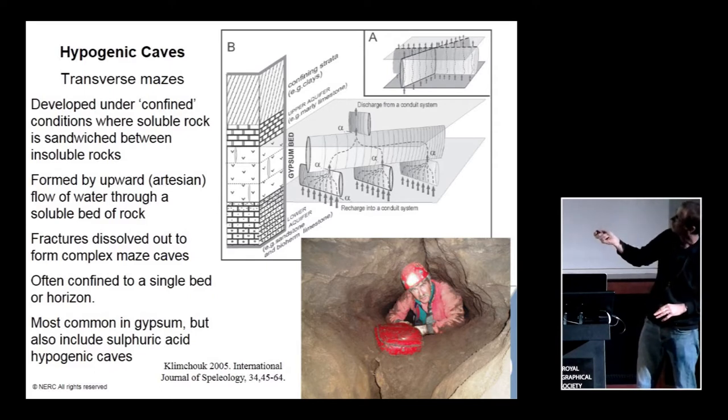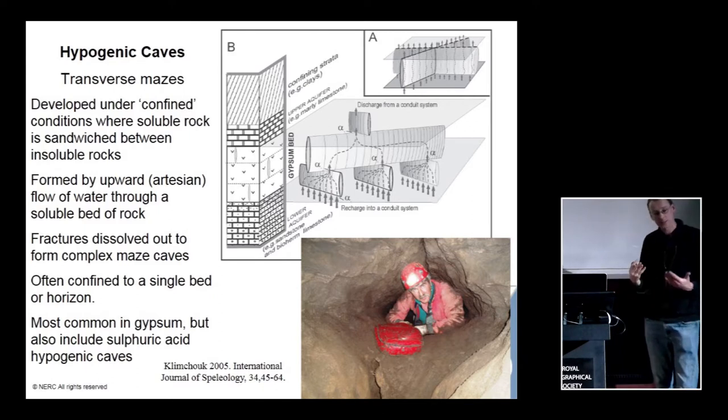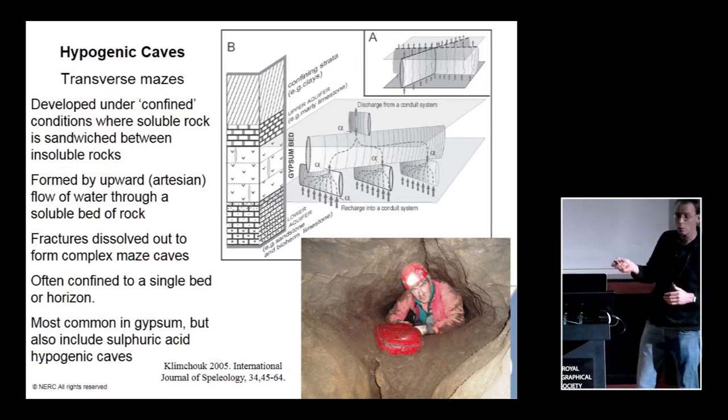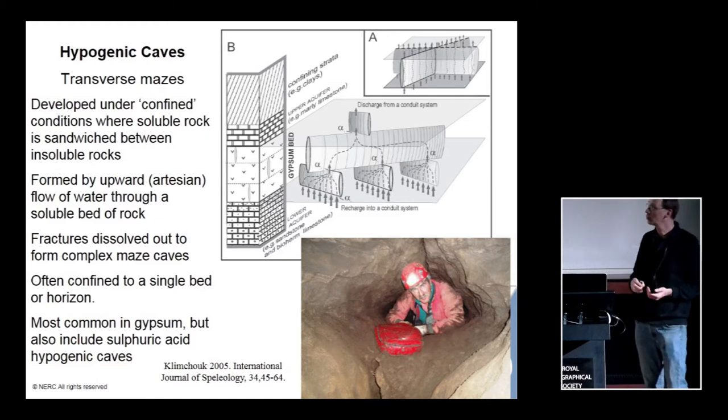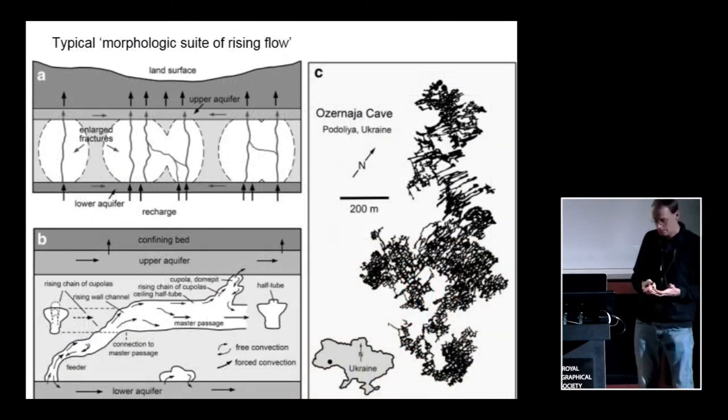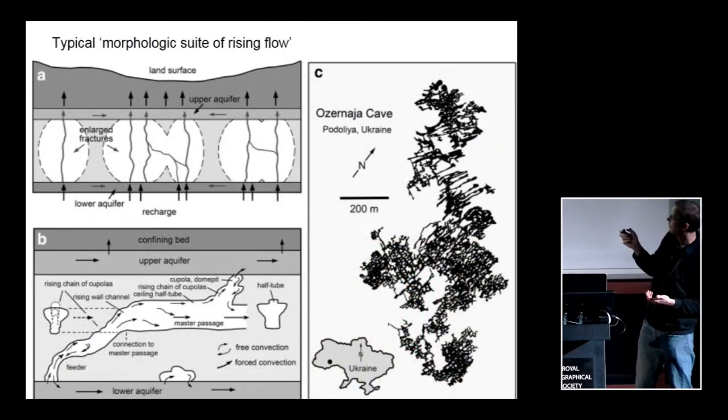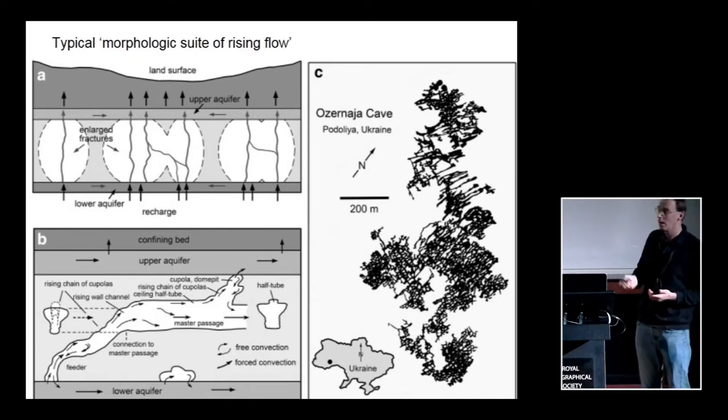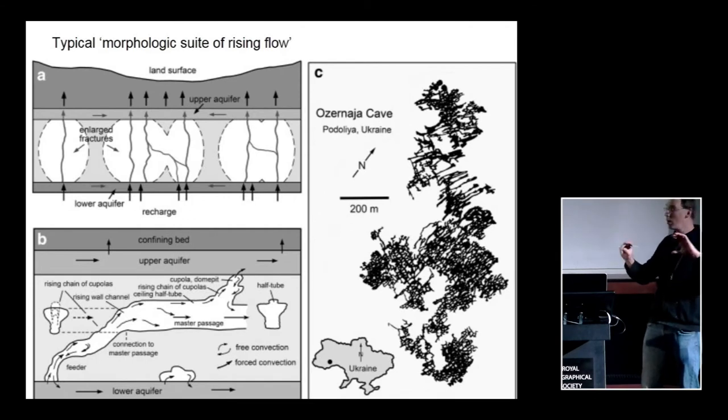where you've got flow upwards from an underlying bed through the soluble rock unit and then flowing out into another unit above. So you might get flow coming up through this limestone here into the gypsum, dissolving out the gypsum and then leaking out through the top. And because this artesian flow is controlled by the fractures in the rock, you actually get quite complex maze caves. And they're often confined to a single bed. So you can see that you've got these fractures here bringing recharge up into this gypsum bed which dissolves out and then flowing out through another fracture into a higher level passage.